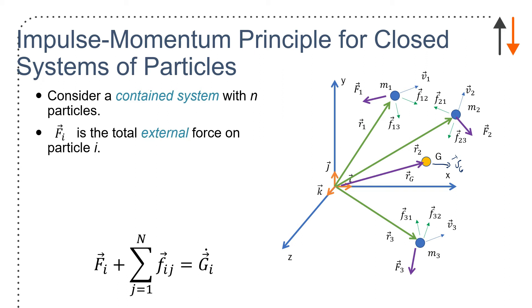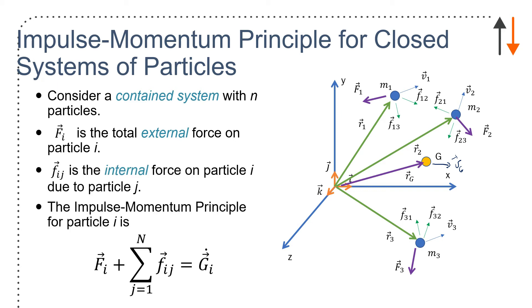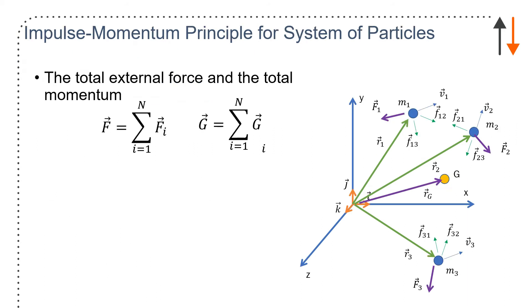F sub i is the total external force on particle i, so those are all of the external forces. F sub ij is the total internal forces, and the impulse momentum of each individual particle is going to be the external forces plus the sum of all the internal forces, which equals d/dt of linear momentum. Now, you can see where my problem is, because I've got G for my center of mass here, and I have G for my linear momentum. You can blame the text for that—I'm using this particular notation.